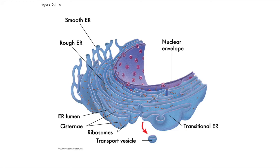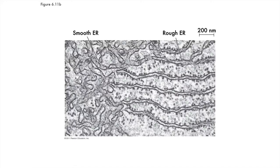We'll see lumens quite a bit — it's a very common word. Bits of the ER can be pinched off into bubbles called transport vesicles. The rough ER looks more like stacks of pancakes, while smooth ER looks more like funnel cake. This TEM image shows how the two types of ER are interconnected, but there's also a clear change in shape between them.